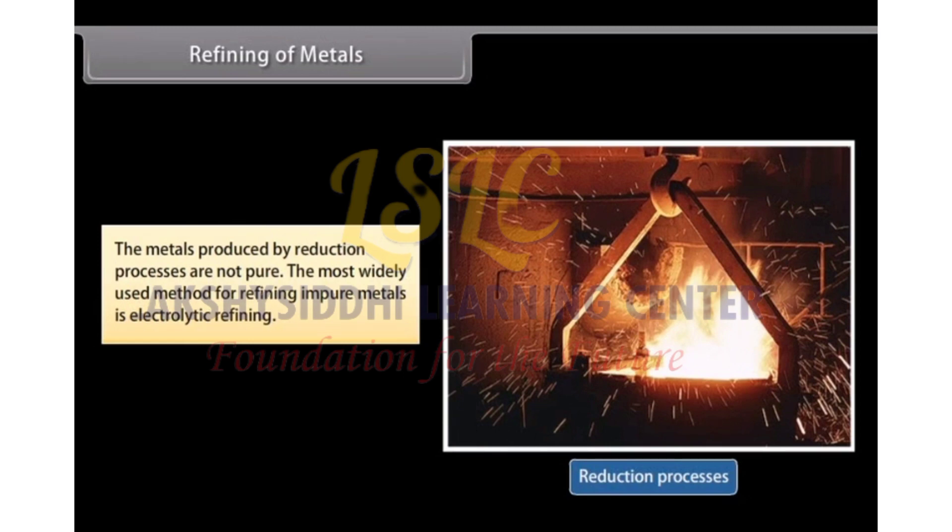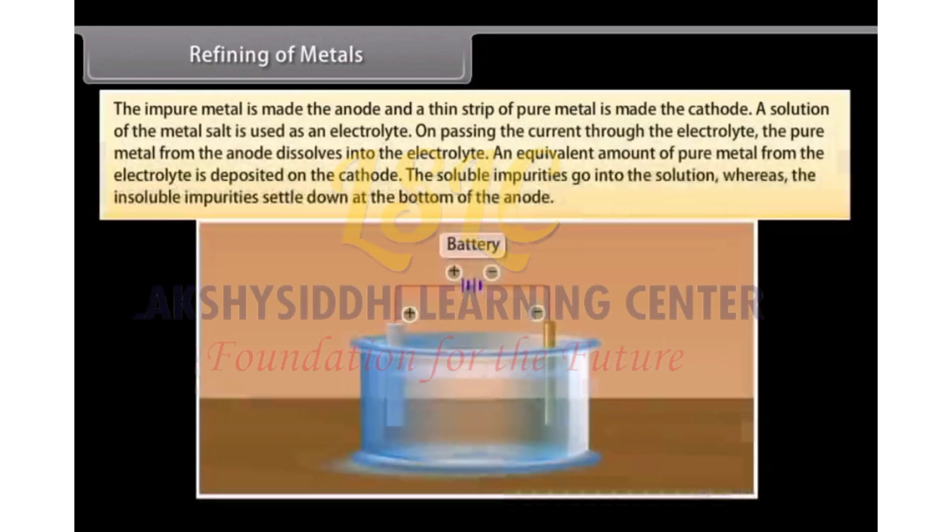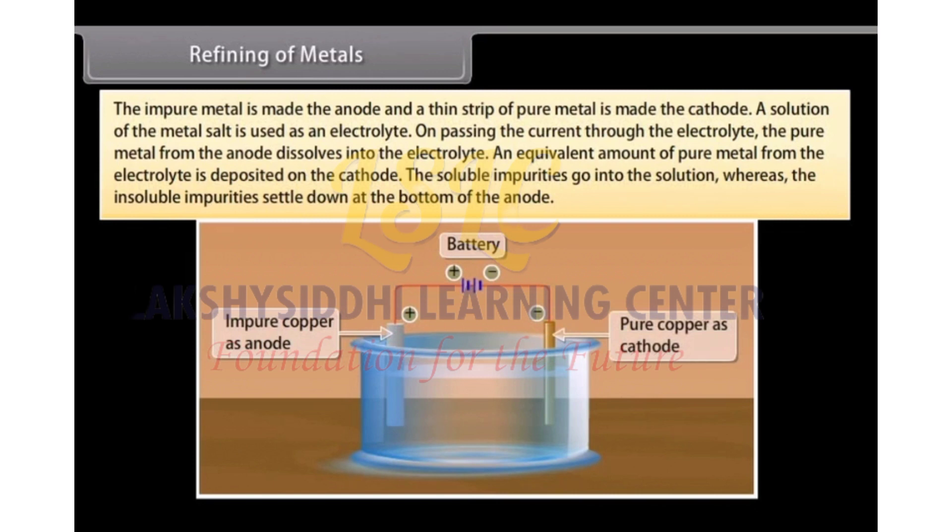Many metals are refined electrolytically. The impure metal is made the anode and a thin strip of pure metal is made of cathode. A solution of the metal salt is used as an electrolyte.